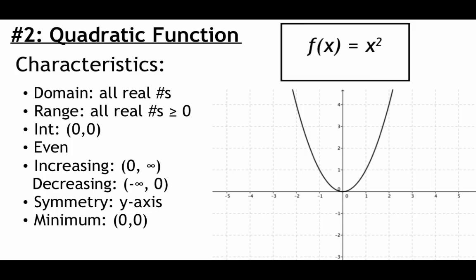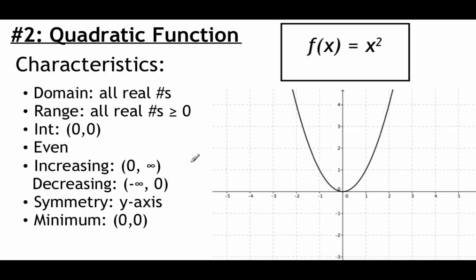Our next parent function is a quadratic function, f of x equals x squared, which graphs as a parabola. You can identify a quadratic by seeing that squared on an x or by seeing the parabola graph. The domain is all real numbers since squaring isn't one of those problematic operations. The range is greater than or equal to zero since squaring always gives a positive result. Intercepts are at the origin 0, 0. It's an even function with y-axis symmetry, increasing on 0 to infinity, decreasing on negative infinity to 0, with a minimum point at 0, 0.